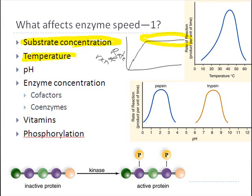Temperature can also affect enzyme speed. Lower temperatures mean lower energy and a lower number of reactions occurring. Higher temperatures mean more reactions occurring because molecules are vibrating more quickly and more likely to bump into an enzyme molecule. However, there's an upper limit — if temperature gets too high, the enzymes will begin to denature: they will unfold and lose their specific shape. Once that happens, they are no longer shaped correctly to perform the reaction, and the rate of product formation drops way off.